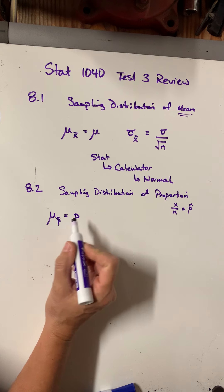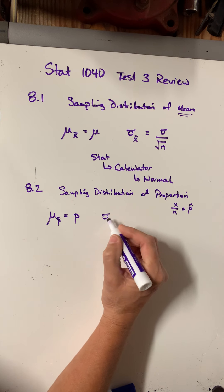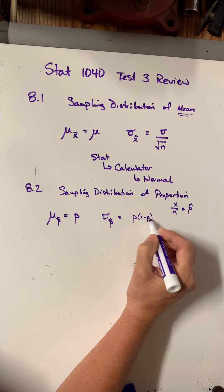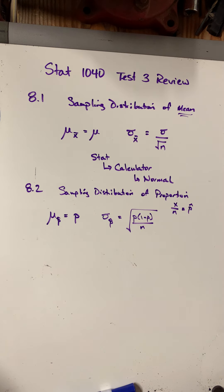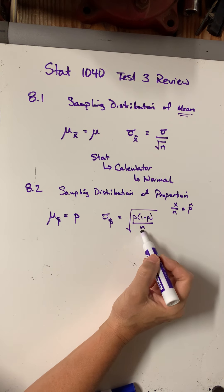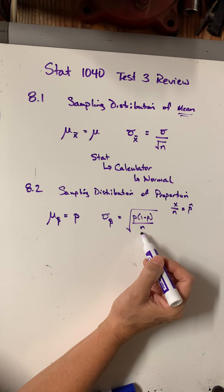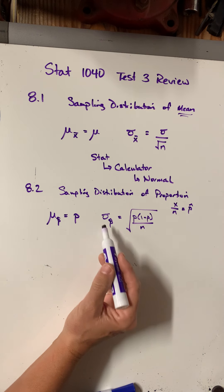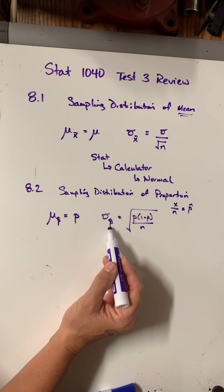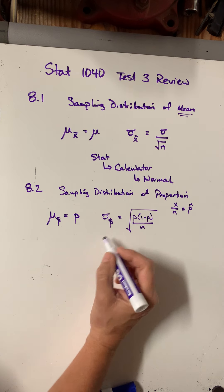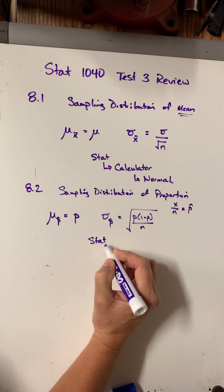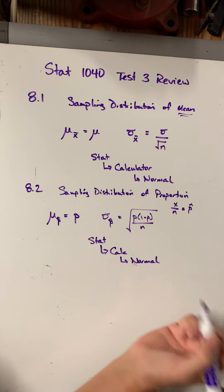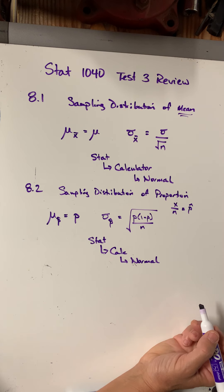I can find the mean of a sampling distribution of a proportion, and I can find the standard deviation of a sampling distribution of a proportion, which is the square root of p times (1 minus p) over n. If they change the sample size, you'd need to recompute your standard deviation of the sampling distribution of the proportion, and re-enter that into StatCrunch calculator normal — inputting your mean and standard deviation to answer the probability question.